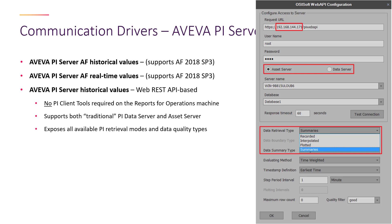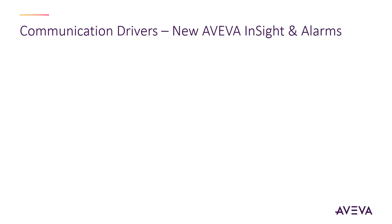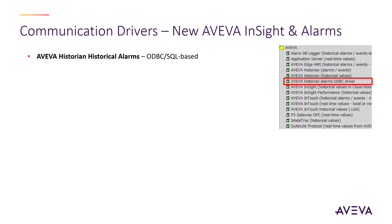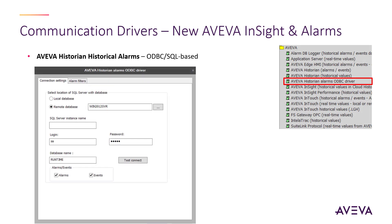It works with both the traditional PI Data Server and the Asset Server and exposes all retrieval modes and data quality types. We've added an Aviva Historian ODBC driver, which enables you to connect and gather data from your Aviva Historian and run traditional SQL queries on it, giving much more flexibility to generating the data for your reports.